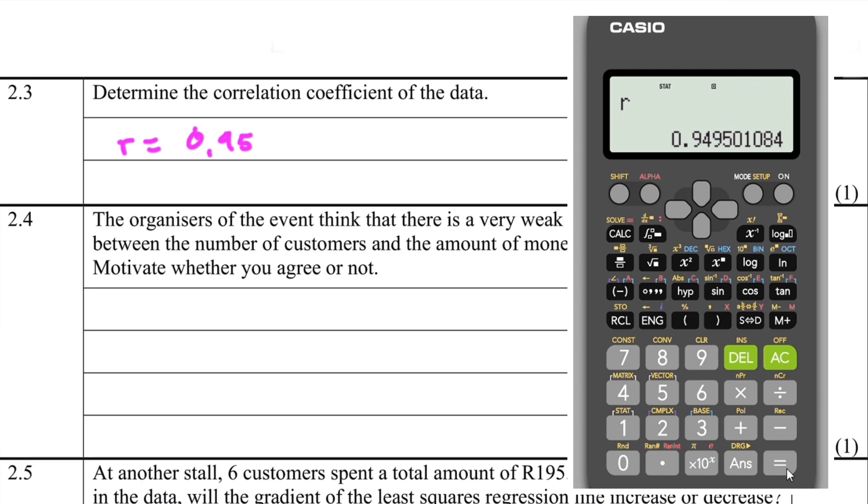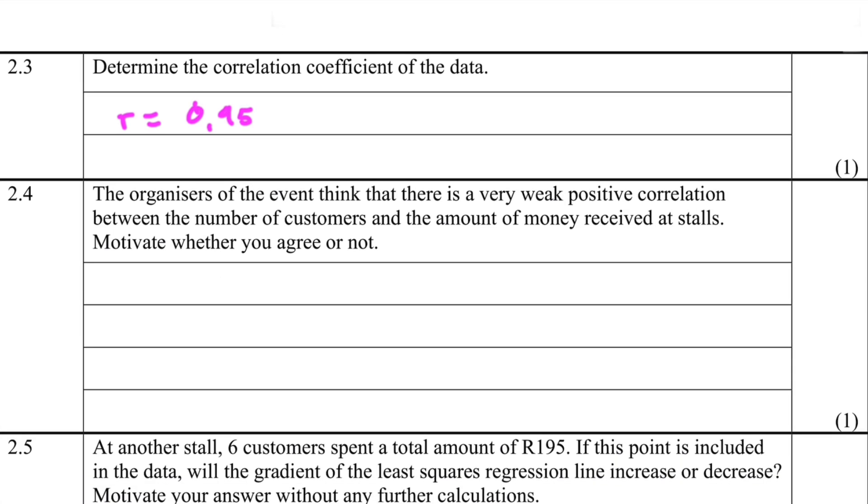2.4: The organizers of the event think that there is a very weak positive correlation between the number of customers and the amount of money received at stalls. Motivate whether you agree or not. Obviously I totally disagree. And why do I totally disagree? We have a very high correlation of 0.95. Don't forget, correlation is out of one. So 0.95 is very, very, very high. If the correlation is one, then it will be perfect, but 0.95 is still very high. Maybe if it was 0.3 we could deem that weak, but 0.95 is very high. X is really having an influence on y.